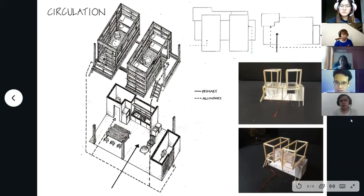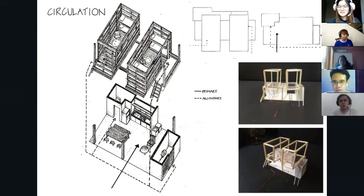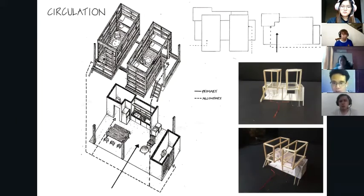For circulation, it is shown with solid and dotted lines in the diagrams and a red line in the model. The solid line shows the main primary circulation — the main pathway into the building — which leads into the communal space that guests would normally use. On the ground floor, the secondary circulation leads to the service areas, including the kitchen and two toilets, and vertically towards the first floor. It also separates into two different paths: to the right-hand living and sleeping area, and to the left-hand living and sleeping area.